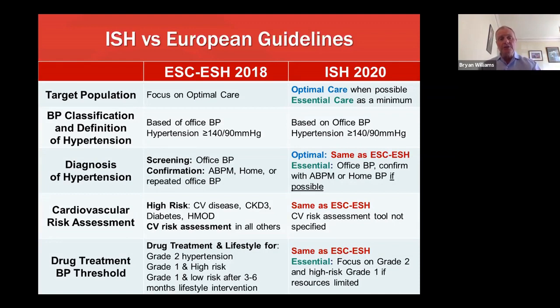The classification of blood pressure is based on office blood pressure in both guidelines, as it is around the world, and this is based on a diagnosis of hypertension when blood pressure is more than 140 over 90.